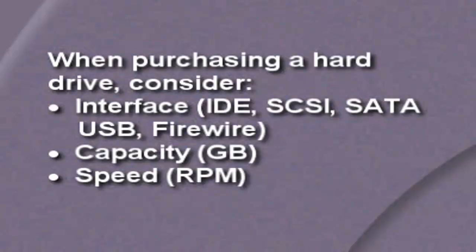Another consideration is the speed at which the platters spin. Cheap low-end drives spin as slow as 3,500 RPMs, while a really high-end drive spins at 10,000 RPMs. The faster the platters spin, the faster data can be read or written. So if performance is an issue, invest in a hard disk drive that spins very fast rather than buying an inexpensive low-end drive.